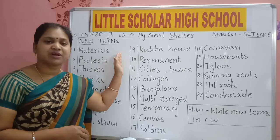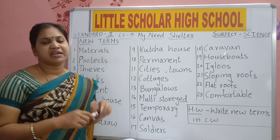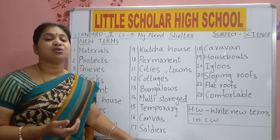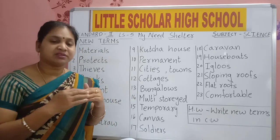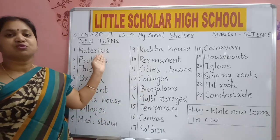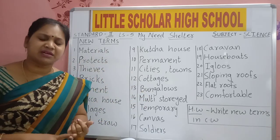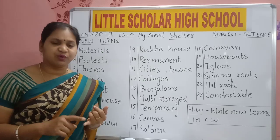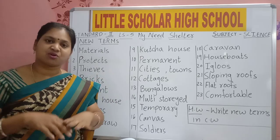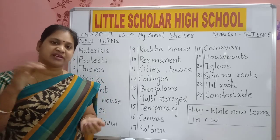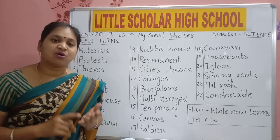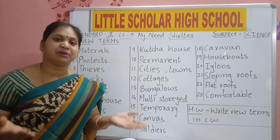For example, to write on the board I need a marker — marker is the material I need. To complete one thing, what things we need, that is known as material. To make a house, we need many materials — bricks, rods for putting pillars, cement, and sand. All these are materials needed to build a house.